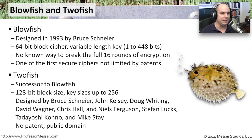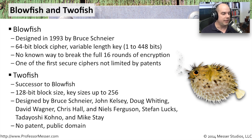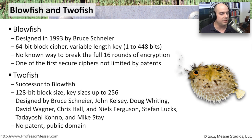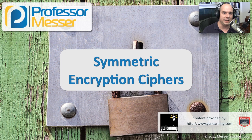Twofish is the successor to Blowfish. It uses a 128-bit block size and can have key sizes up to 256 bits. Many people contributed to this algorithm with the effort to make it even stronger than Blowfish. They've produced a set of ciphers that nobody has really been able to find any big problems with, and it's still being used today. Again, there's no patent associated with Blowfish or Twofish — these are in the public domain, so anyone can use these algorithms in their development and applications without any licensing whatsoever.